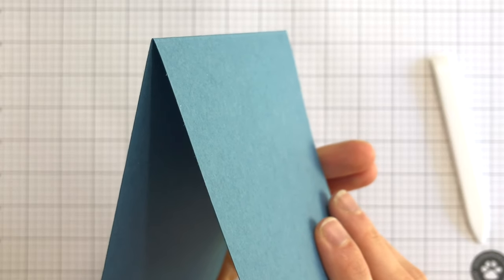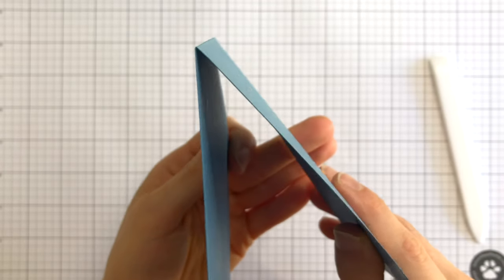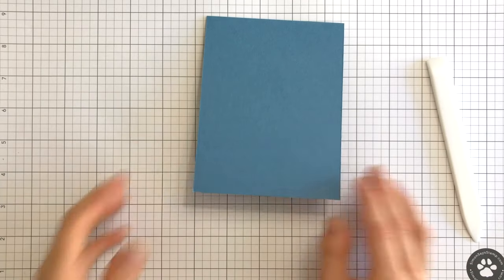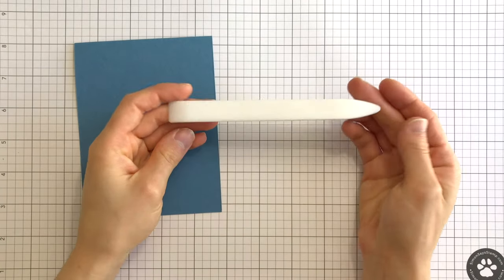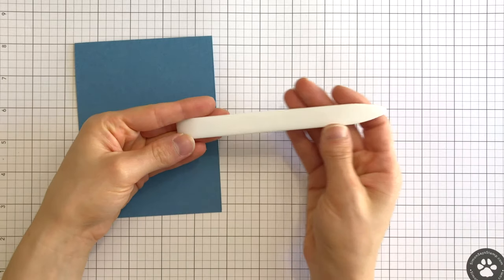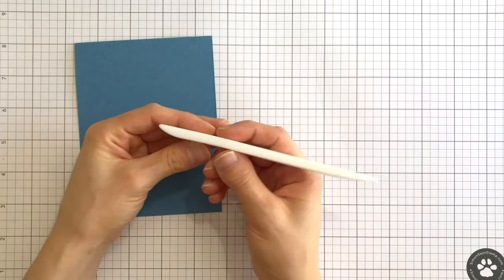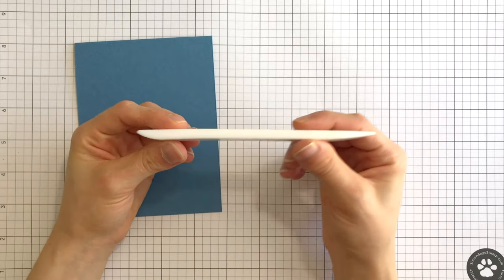Our exclusive bone folder is made from Teflon, which means that adhesives, inks, and paints will not stick to it, it will not get worn down, discolored, or stained with age, and instead, your bone folder will get smoother and shinier over time and be in your crafty tool stash for years to come.